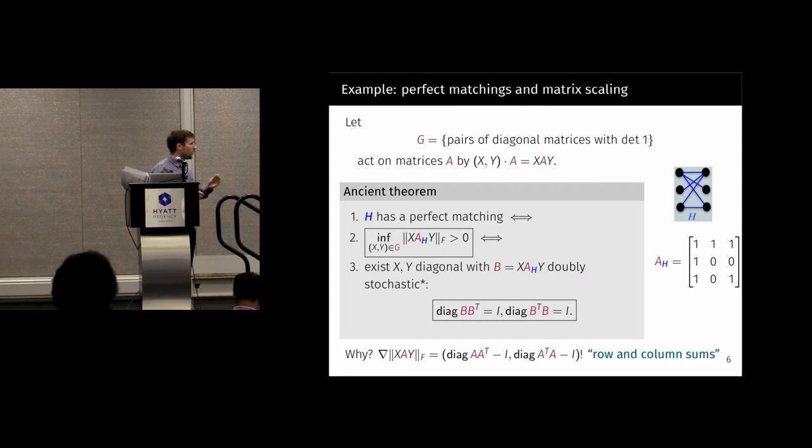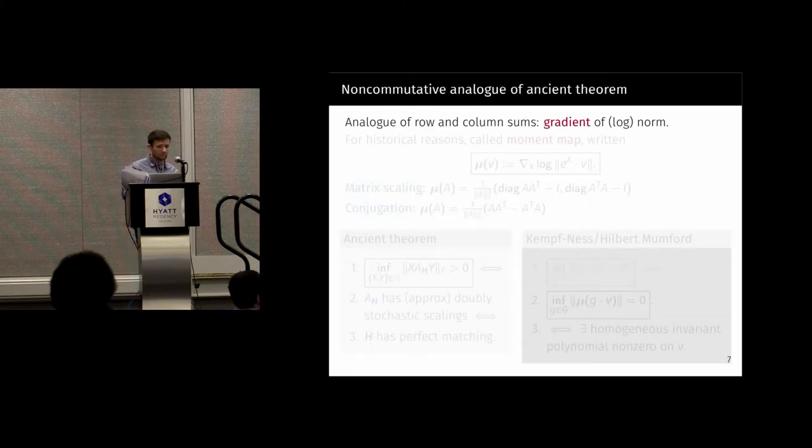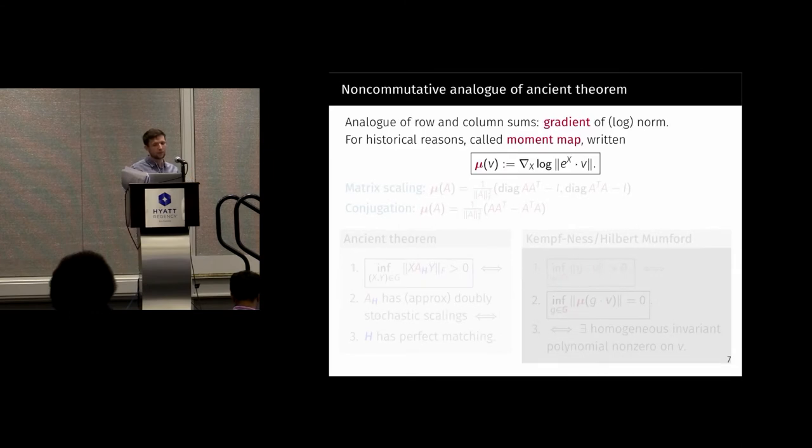And why does this hold? Well, it's basically because the gradient of this objective function—by the way, that F means Frobenius norm, it means you sum the squares of the entries—the gradient of the objective function is exactly the thing that you want to set to zero if you want it to be doubly stochastic. So this theorem is just calculus. I'm going to tell you about the analog of the row and column sums in the non-commutative setting. It's really just the gradient of the log norm. But for some historical reasons, it's called the moment map.